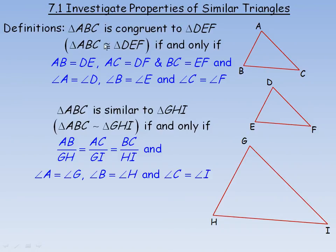Those two triangles are congruent if and only if all of these properties hold. If ABC is congruent to DEF, then side AB equals side DE. Notice that A and B are the first two letters, so that corresponds to the first two letters in the other triangle. AC, the first and third characters, should equal DF — again the first and third. And BC, the last two, should equal EF. So we have three corresponding equal sides.